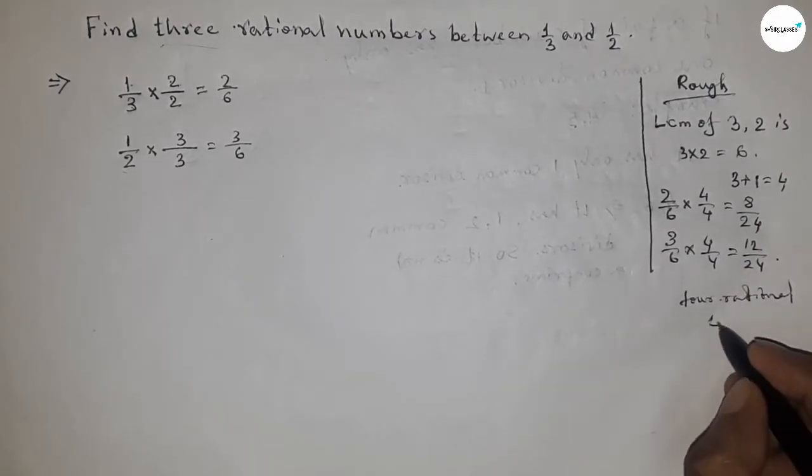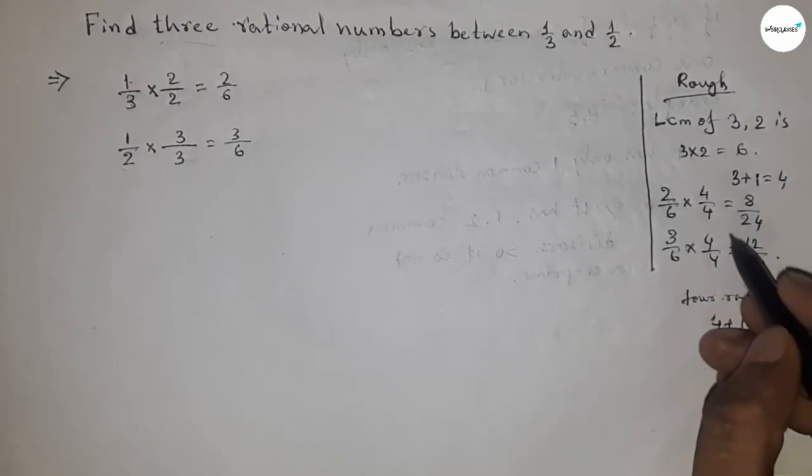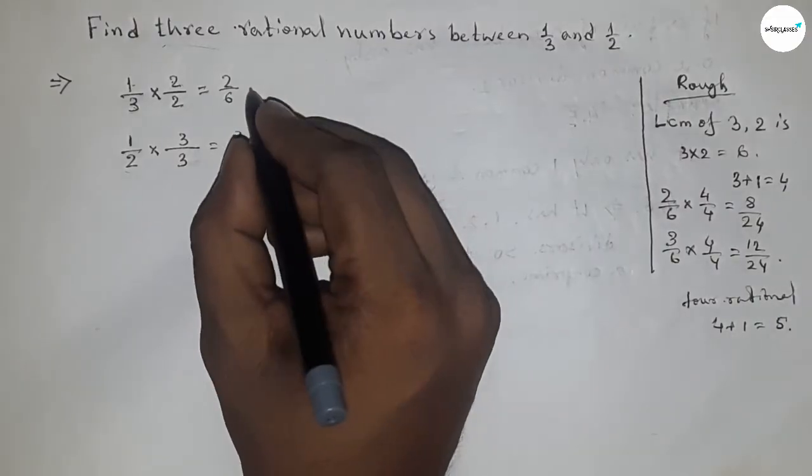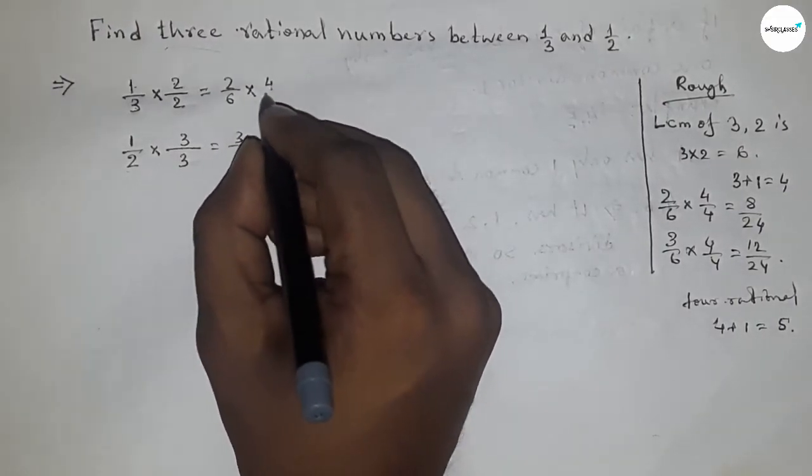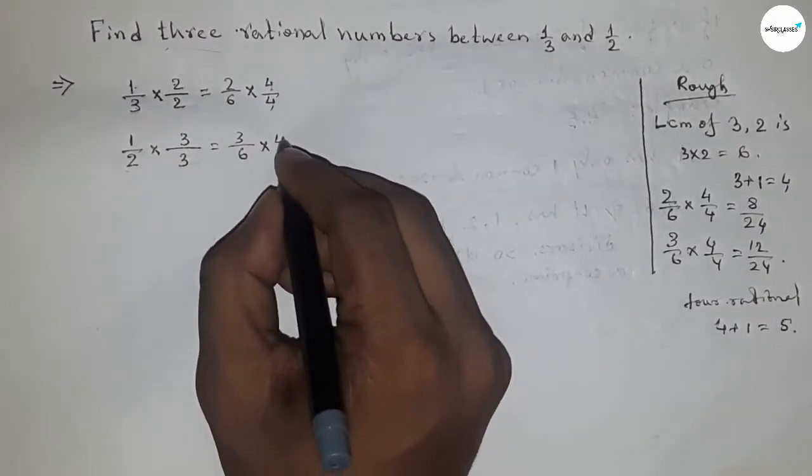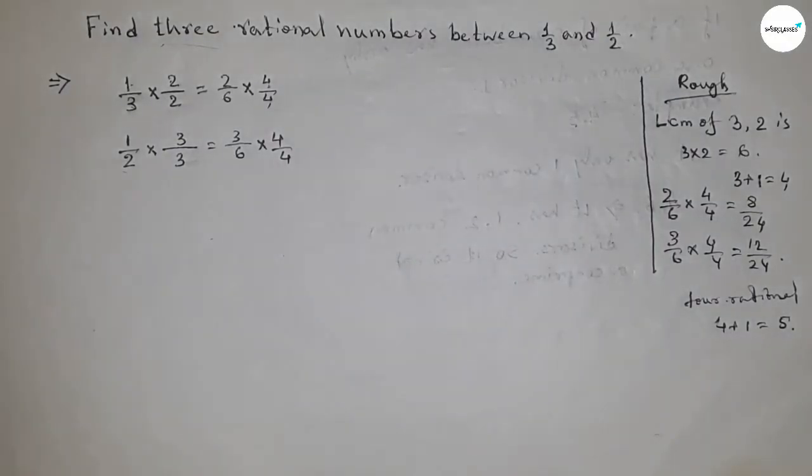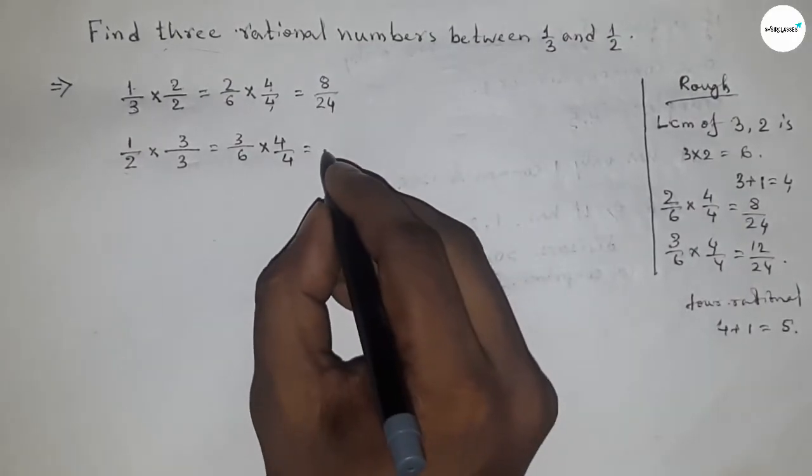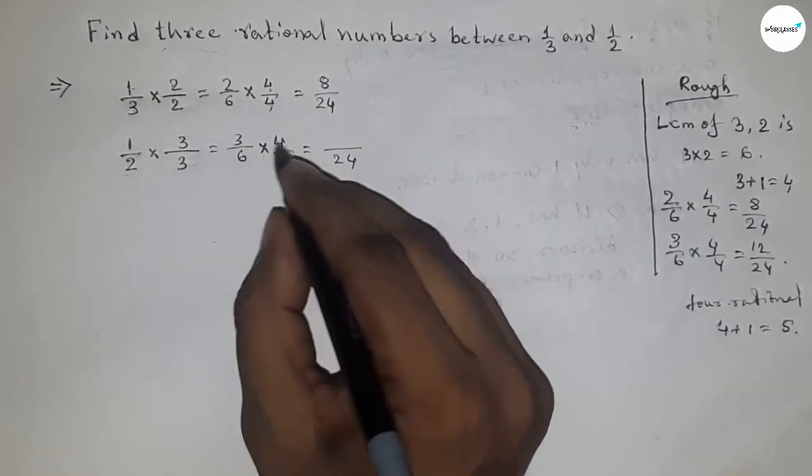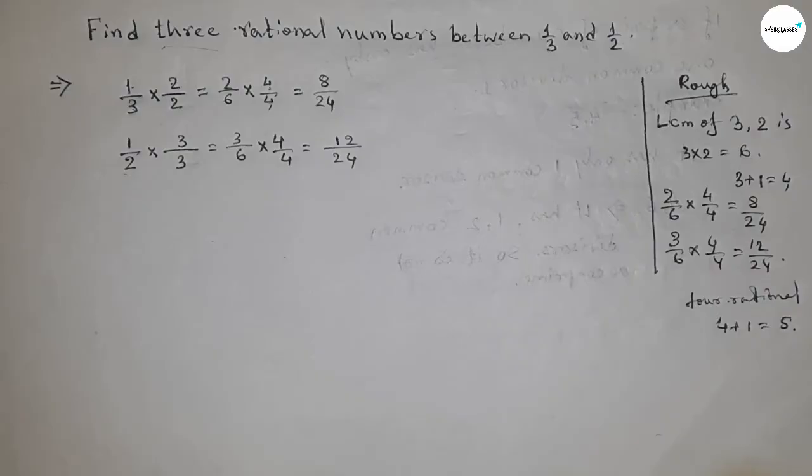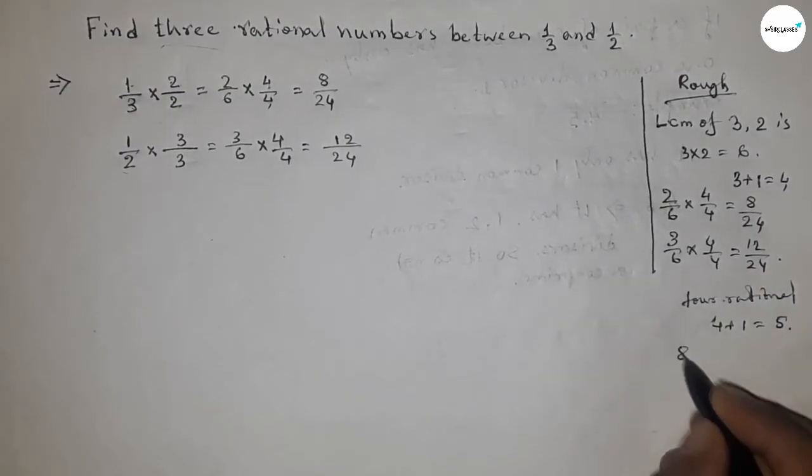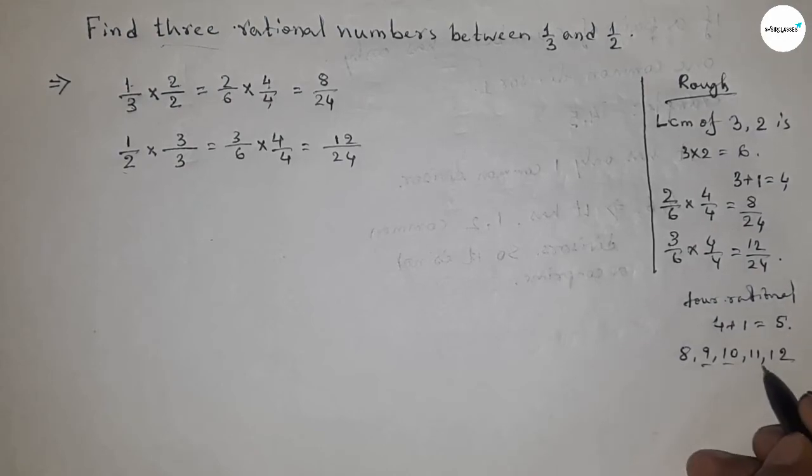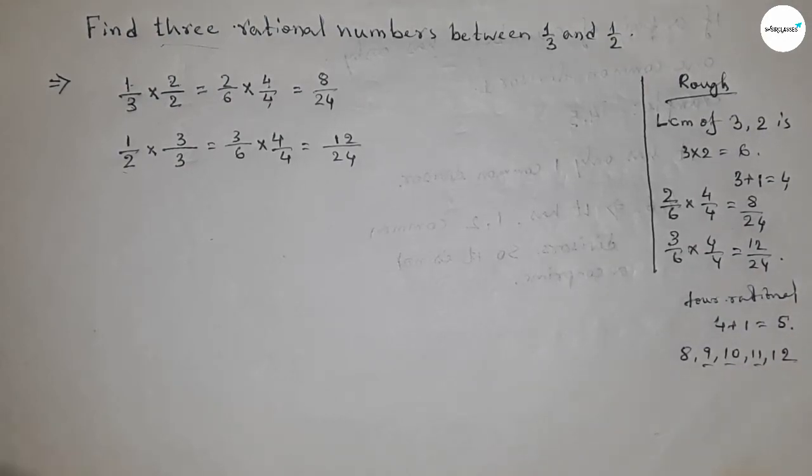If we have to find out 4 rational numbers, then we have to multiply 4 plus 1, so 5. Here we're multiplying 4 upon 4, here 4 by 4, so this is 8 by 24 and this is 12 by 24. So 8, 9, 10, 11, 12.